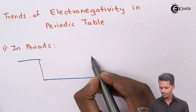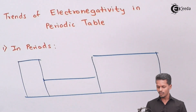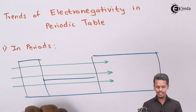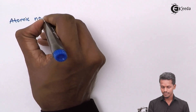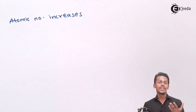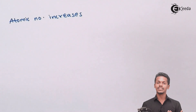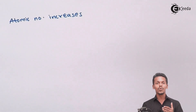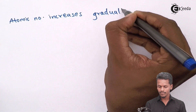Here is a schematic diagram of the periodic table. As we know, if we move along the period from left to right, the atomic number increases. The atomic number increases gradually — for example, lithium has atomic number 3, beryllium 4, and boron 5. So the atomic number goes on increasing gradually.